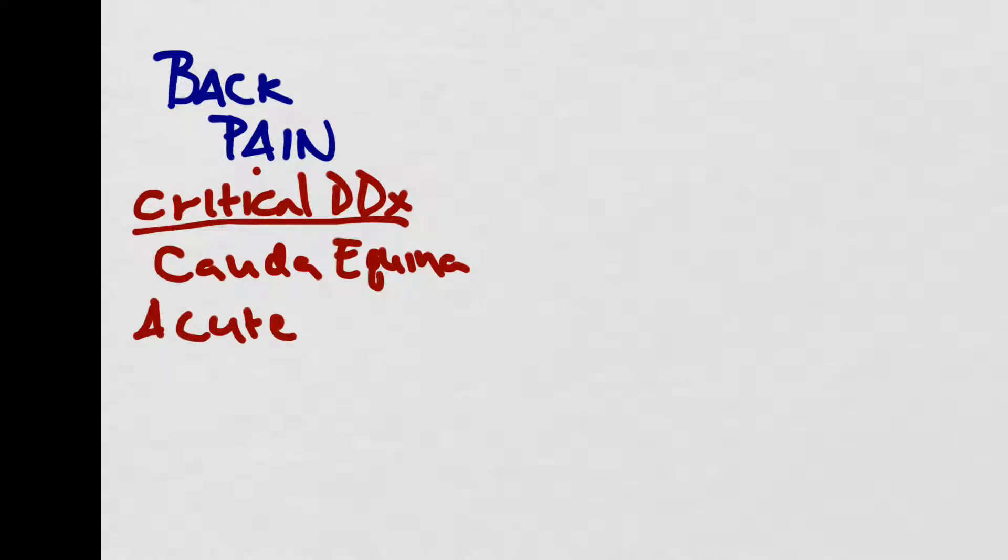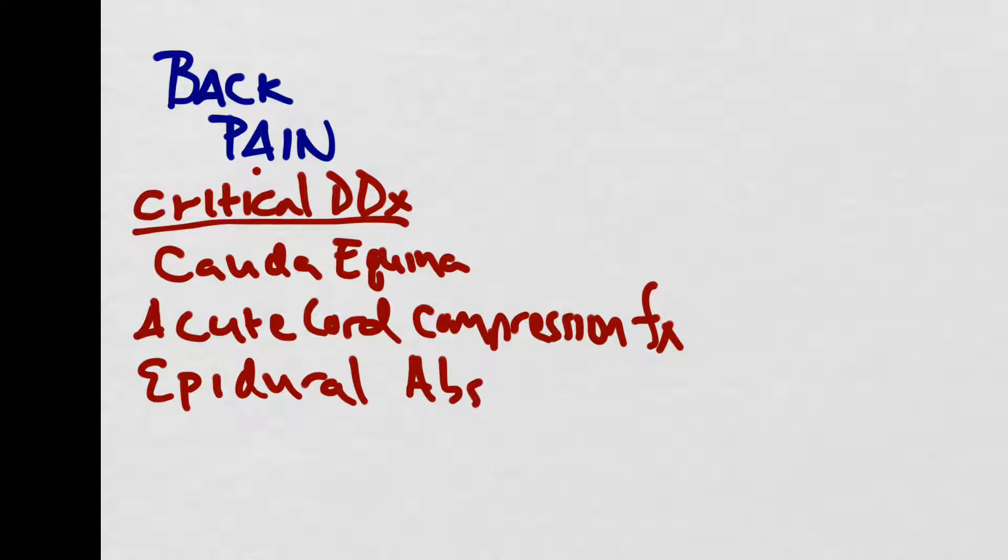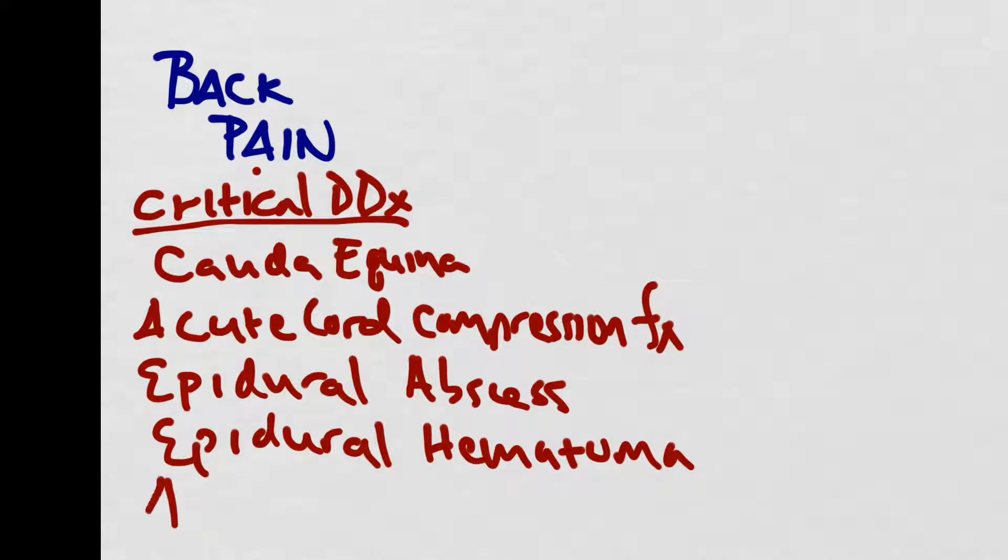Like all chief complaints, the first thing we need to do is develop a critical differential diagnosis. For back pain, this includes cauda equina, acute cord compression from a fracture, epidural abscess, epidural hematoma, and finally, abdominal aortic aneurysm.